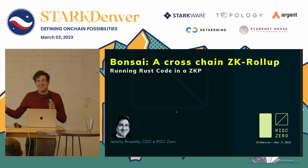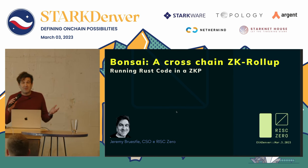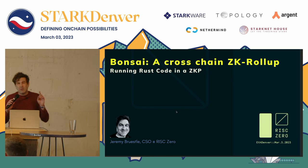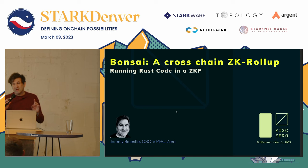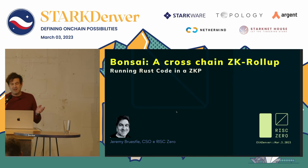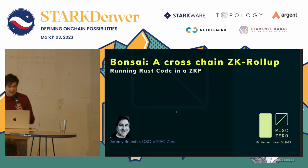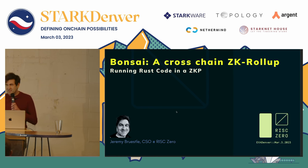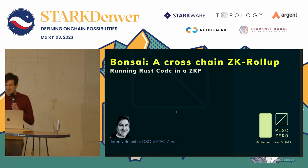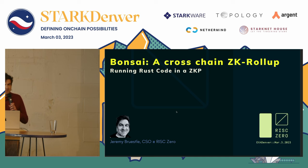Today I am here to talk about Bonsai, which is a cross-chain ZK roll-up that has the remarkable capacity to run Rust code — arbitrary general purpose code inside of a ZKP. I'm Jeremy from RISC-Zero; I'm the chief science officer. I'm going to begin with a little background in terms of ZKP computation, and then we're going to talk about Bonsai in particular.